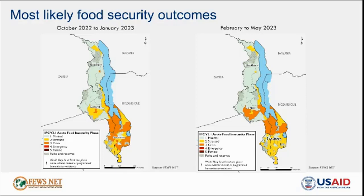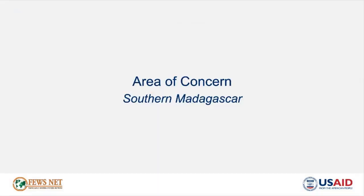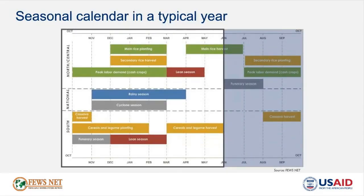I will now hand the presentation to my colleague Elizabeth. Thanks, Mikael. So I'll start off first with Madagascar's seasonal calendar, focusing on southern Madagascar, which is our area of highest concern for the country. By October, the cassava harvests have normally finished and planting for the main agricultural season will be beginning in some areas, extending through January. Peak labor demand for cash crops will continue through the end of the year, which is typically an important source of income for households in the Grand South who would normally seasonally migrate for these harvests. The lean season normally starts towards the end of the year, but this year the lean season in the Grand South started atypically early, in about September.